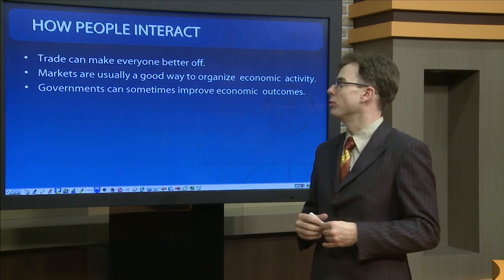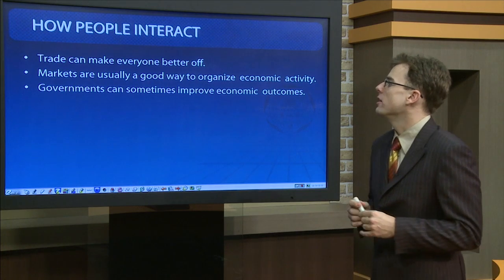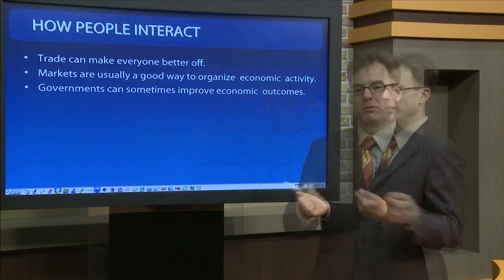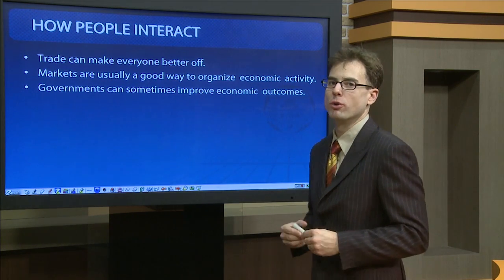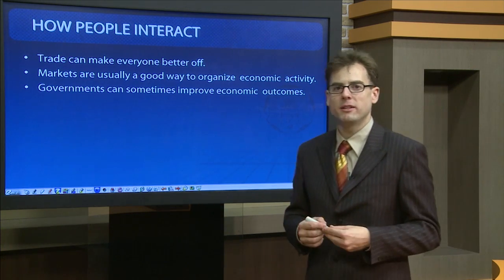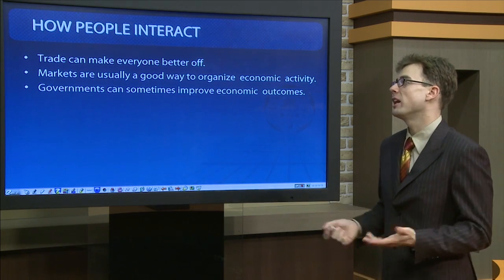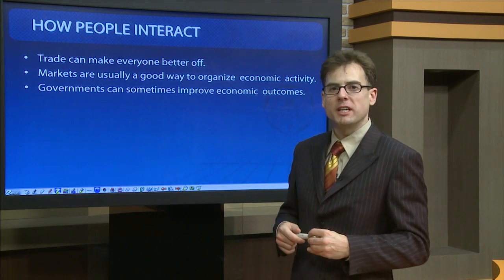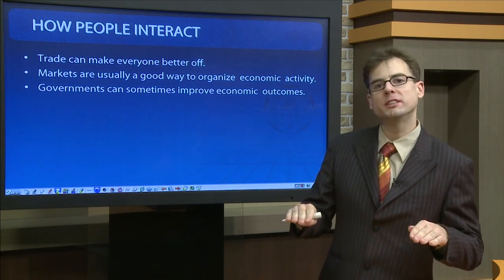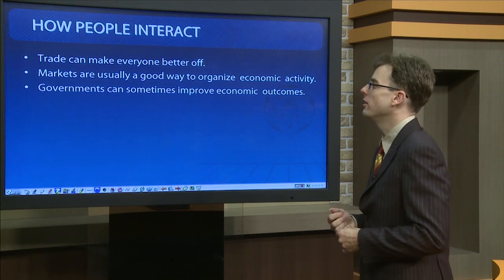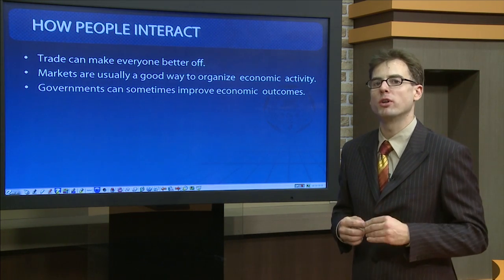The second set of principles deals with how people interact with each other. The central idea is that interaction among people can benefit everybody. It is intuitive to think that people would only agree to cooperate if both could gain from the interaction. Trade has this property — trade between countries or between companies and consumers can benefit both sides. There is a famous economic quote that trade is not a zero-sum game; all participants in trade can benefit. We will study the nuances of this in chapter three.